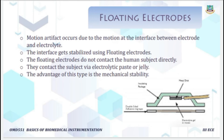The next type is the floating electrode. In this electrode, the metal does not contact the subject directly; contact is made through an electrolyte bridge. By using this, motion artifacts are eliminated. It is also called a liquid junction electrode. The contact with the subject is via an electrolyte paste or jelly, which provides mechanical stability — that is the main advantage. There is no direct contact between the metal disc and the surface of the skin.